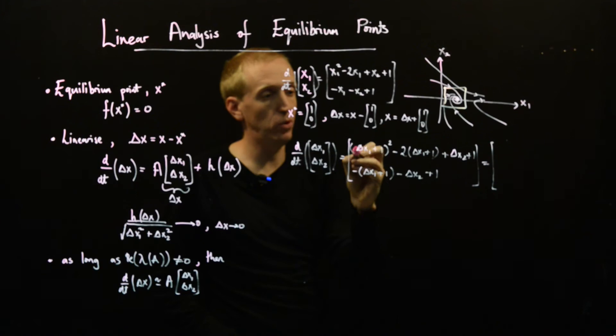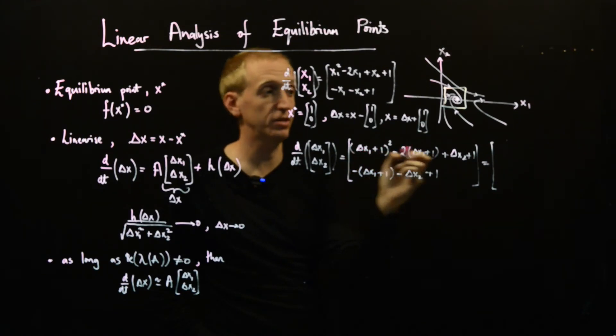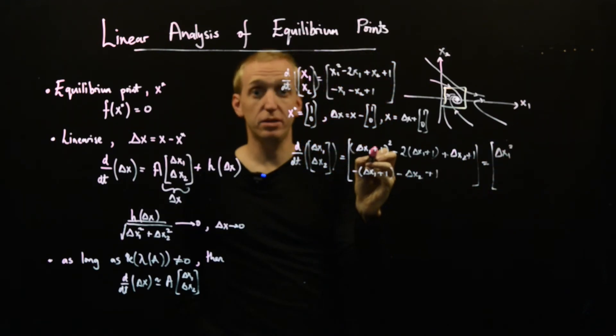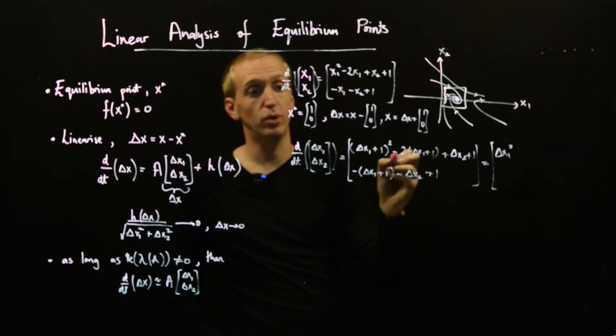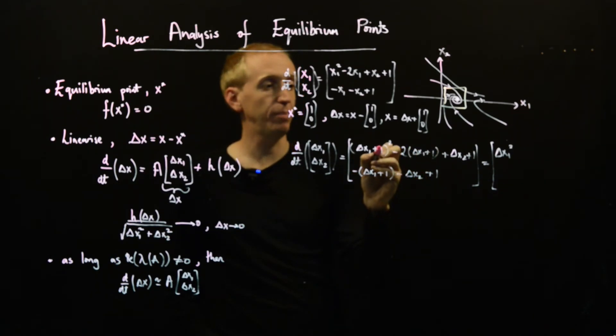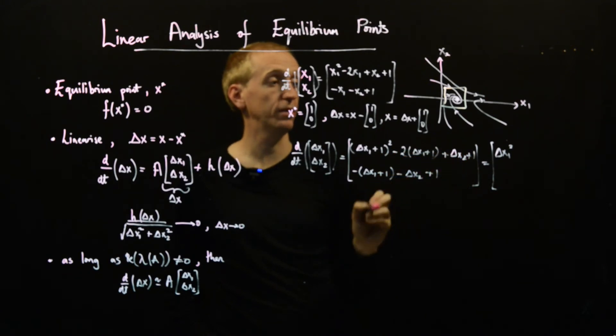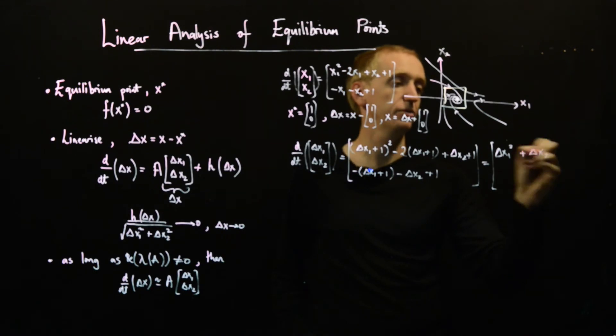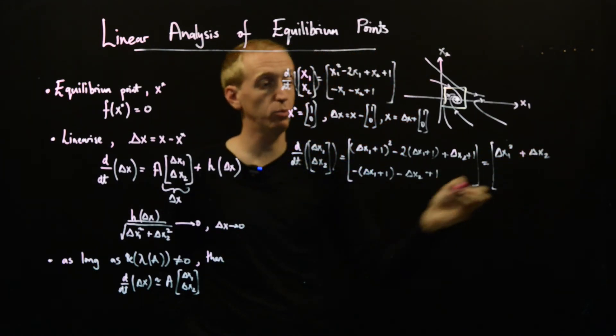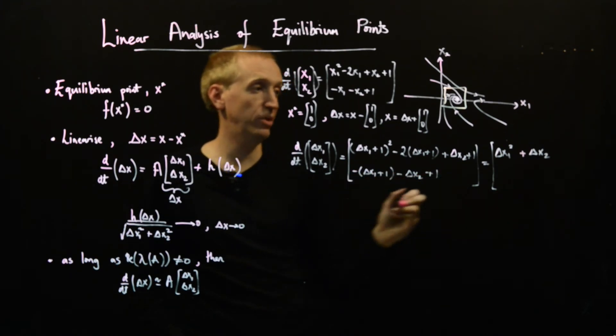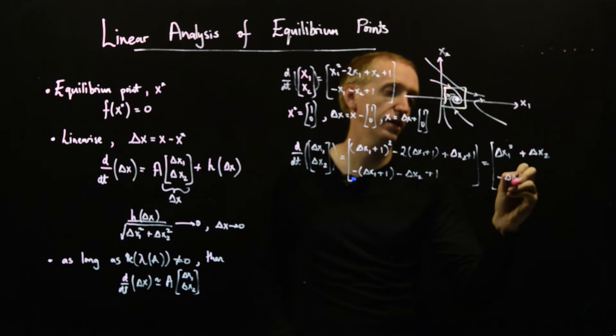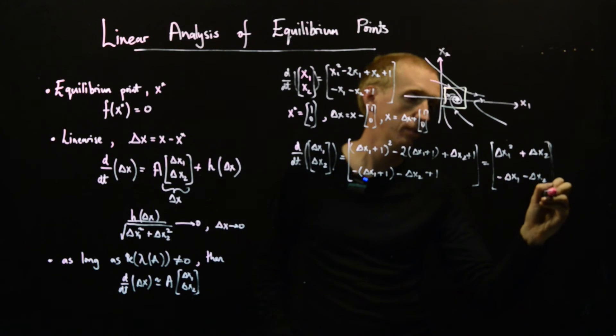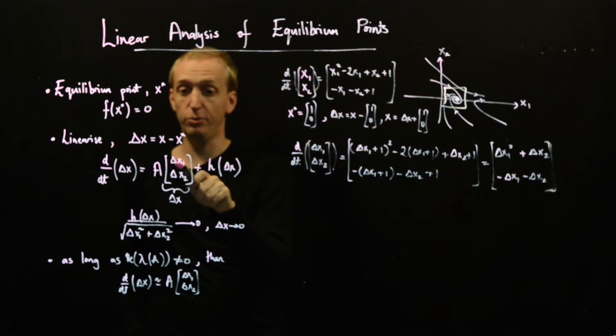And how does this simplify? Well, we multiply this out, and you'll see we get delta x1 squared. And then we get plus 2 delta x1, but we've got a minus 2 delta x1 there, so they cancel out. And then we get a plus 1 minus 2 plus 1, so there's no constant term, but we keep our plus delta x2 term here. So we just multiplied everything out. And on the bottom here, you similarly see that we get minus delta x1 minus delta x2.